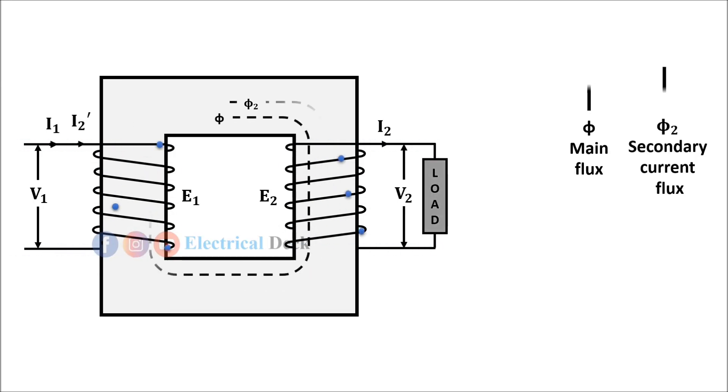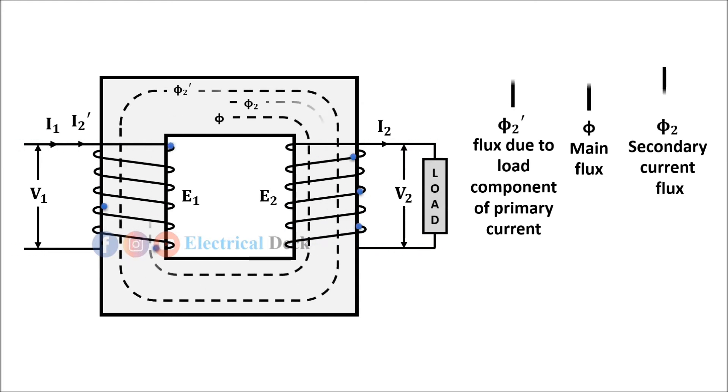This current I₂' is in antiphase with I₂. The current I₂' sets up its own flux φ₂' which opposes the flux φ₂ and helps the main flux φ₁. This flux φ₂' neutralizes the flux φ₂ produced by current I₂.